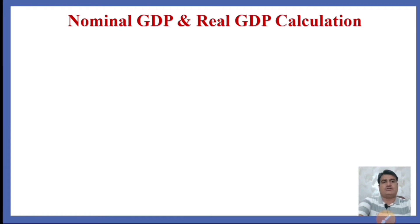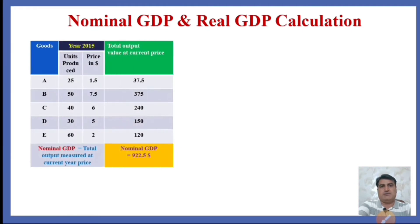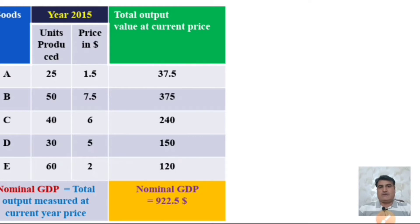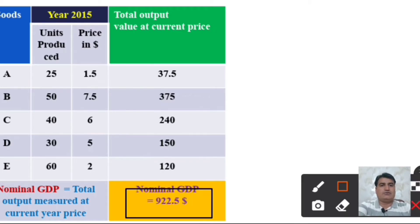Real GDP means total output measured at base year prices. For the nominal GDP calculation for 2015 — already calculated in the previous video — suppose 25 units of commodity A, 50 units of commodity B, 40 units of commodity C, 30 units of commodity D, and 60 units of commodity E were produced, with prices of $1.5, $7.5, $6, $5, and $2 per unit respectively. The total output value at current year price is $922.5, which is the nominal GDP for 2015.